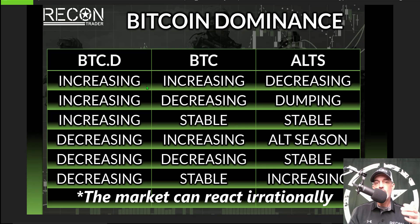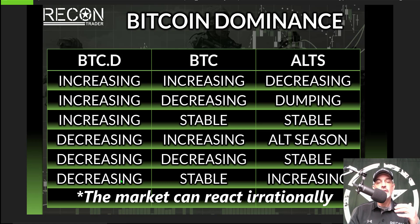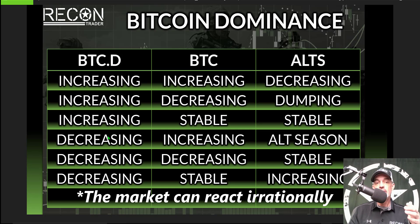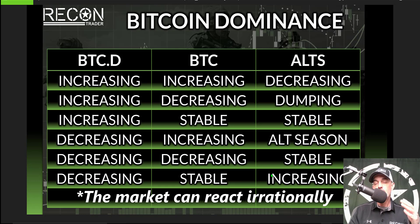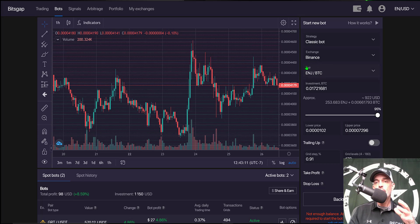These are more like guidelines than rules. If Bitcoin dominance is decreasing and Bitcoin's price is decreasing, the altcoins typically will be stable — moving sideways. If Bitcoin dominance is decreasing and Bitcoin is stable, we could see altcoins start to increase in value. And if Bitcoin dominance is decreasing and Bitcoin's price is increasing, then we're in alt season. We're not there yet, but at worst, alts would be stable given current parameters.